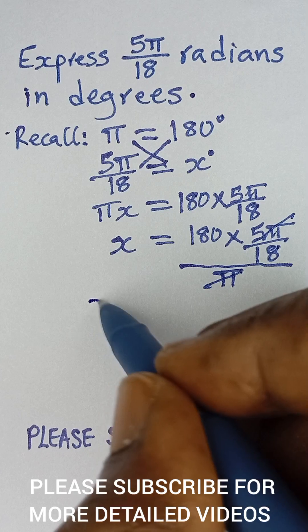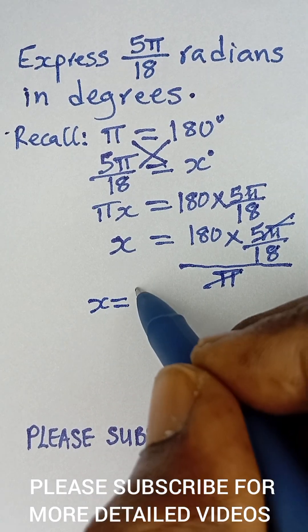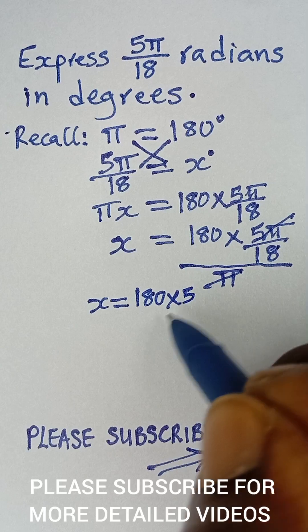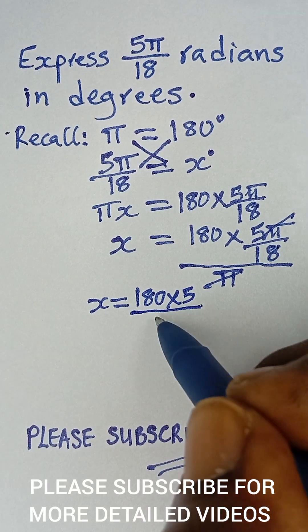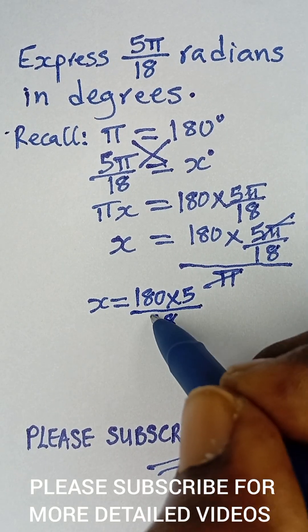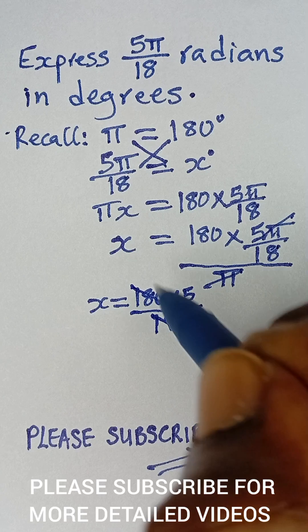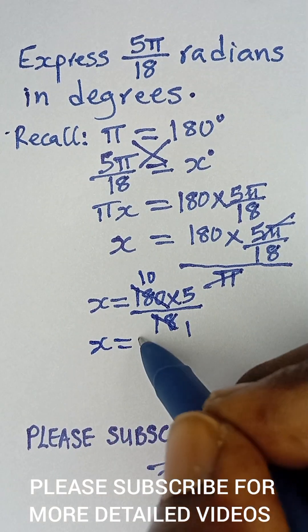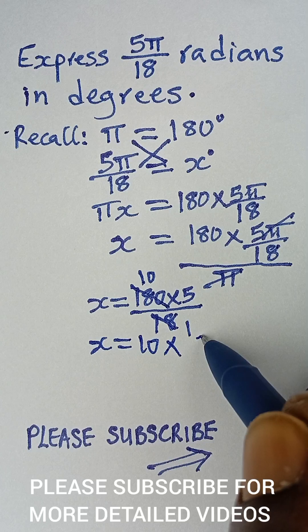So we are left with x equals 180 times 5 over 18. 18 goes into 180 ten times, so x equals 10 times 5.